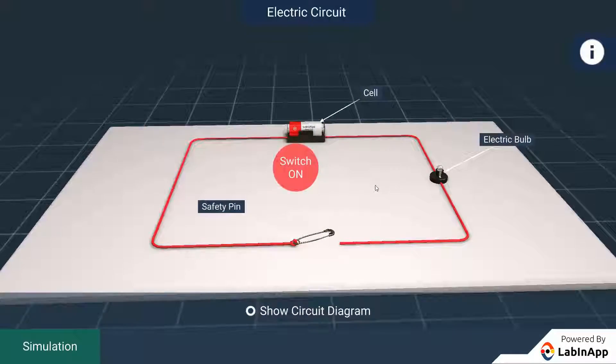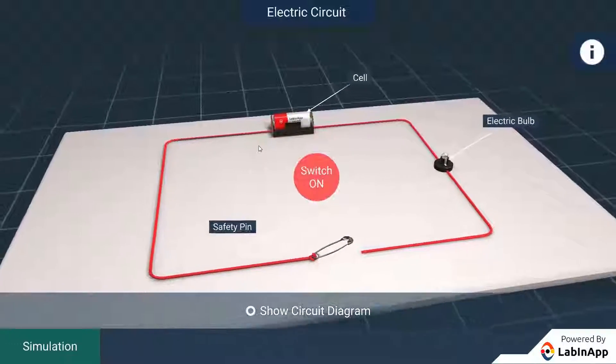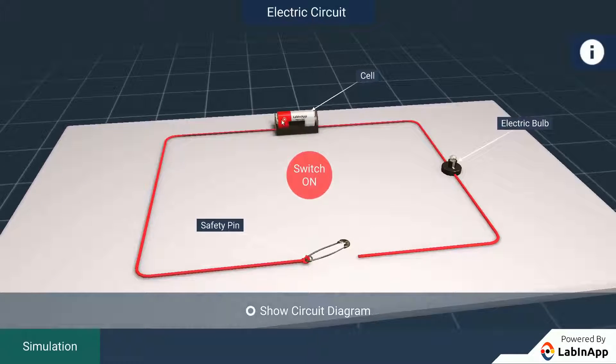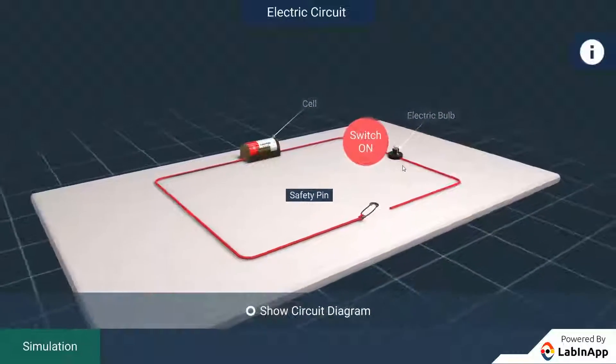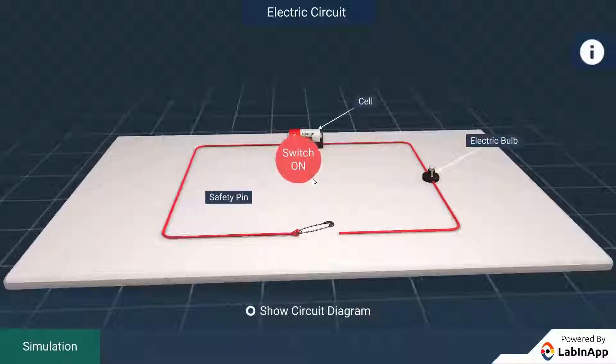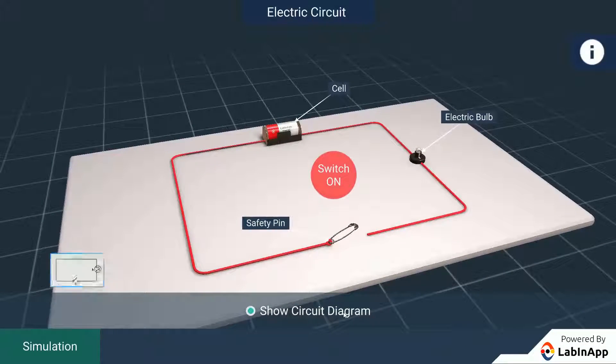We have connected the electric circuit with a battery's positive side connected to a safety pin. Another end of the safety pin is connected to the bulb and the other end of the bulb is connected back to the battery on the negative side. This is the electric circuit. The circuit diagram of this state of the electric circuit is as shown.